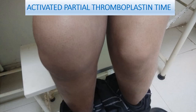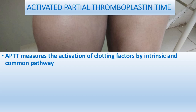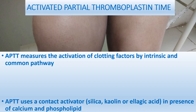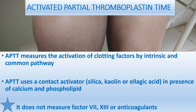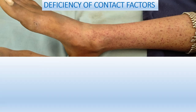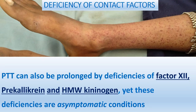Activated partial thromboplastin time measures activation of clotting factors by the intrinsic and common pathway. APTT uses contact activators — silica, kaolin, and ellagic acid — in the presence of calcium and phospholipid. It does not measure factors 7 or 13, or anticoagulant deficiency. APTT can also be prolonged by deficiency of contact factors — factor 12, prekallikrein, and high molecular weight kininogen — but patients with these deficiencies remain asymptomatic, so prolonged APTT with no symptoms suggests contact factor deficiency.